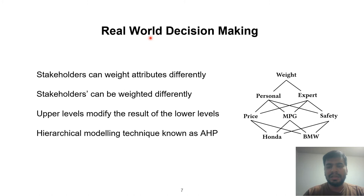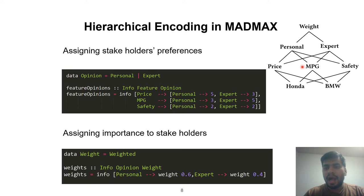So far so good, but the real world decision making can be slightly more complex. For example, we could have family and friends having different preference for price, MPG, and safety than experts, and finally we could decide to give a different weightage to the opinion of family and friends than the experts. This arrangement of various attributes in the form of a hierarchy is called Analytic Hierarchy Process or AHP for short. This is one of the most important decision making tools out there, and our aim with MADMAX is to implement the AHP model shown here.